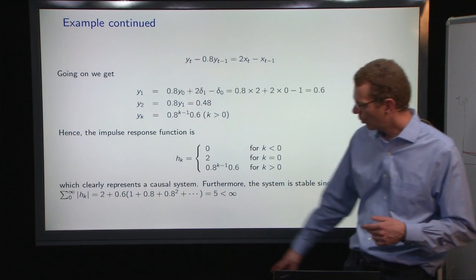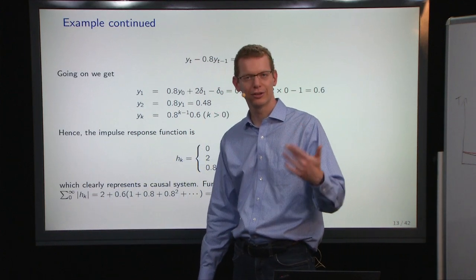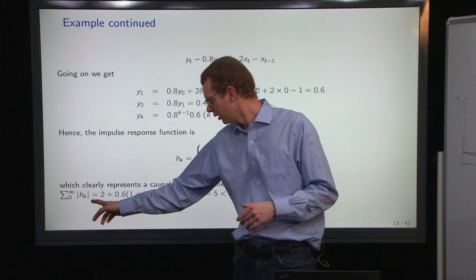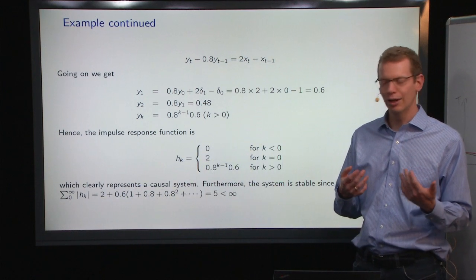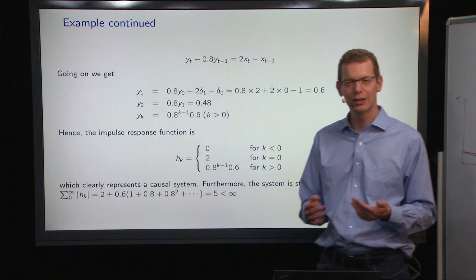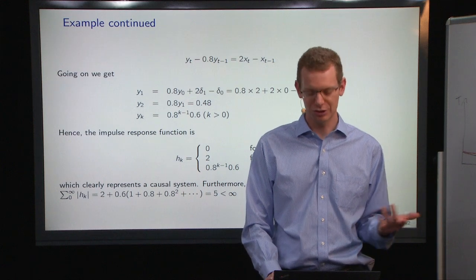So to combine everything, we have this impulse response where it's 0 when k is negative, 2 for k equals 0, and then we have this power series when we're going further up. And if we do the math on this—the sum from zero to infinity of the signal here gives you a 5, and 5 is definitely finite, so the sum converges and the system is stable.